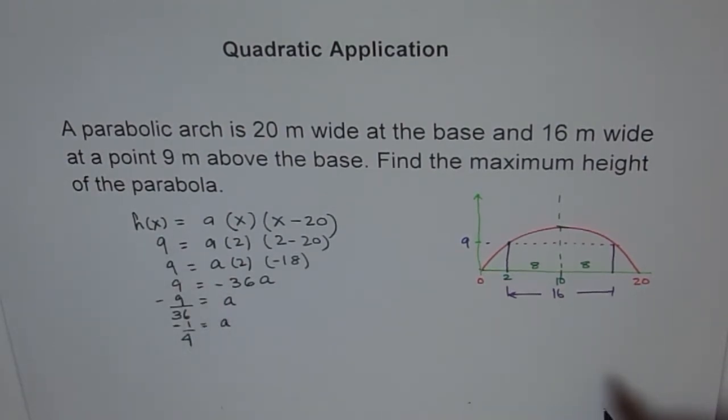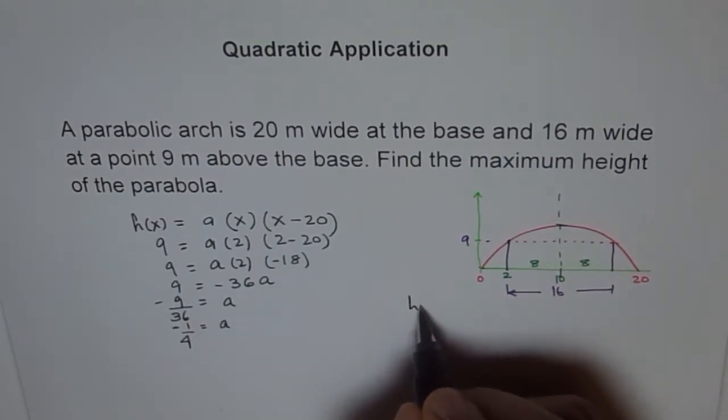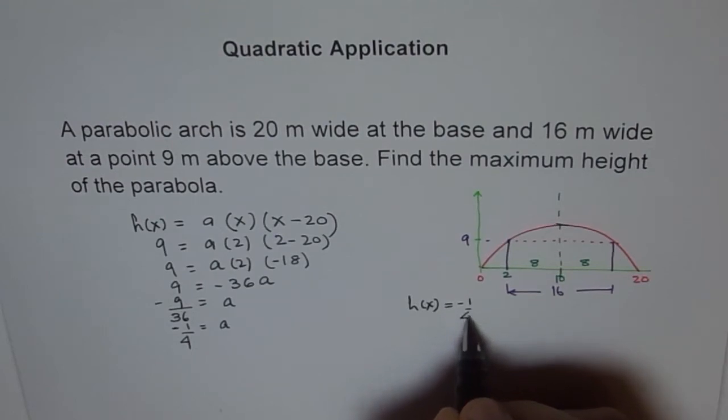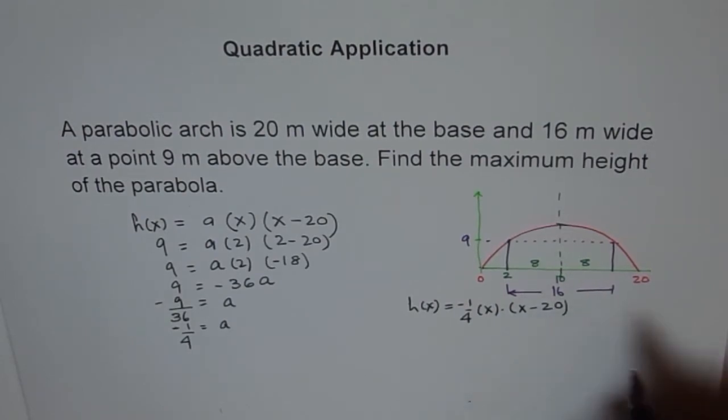Therefore, what is the equation of our parabola? Equation of parabola should be now h(x) equals minus 1 over 4 x times x minus 20. So we got the equation.